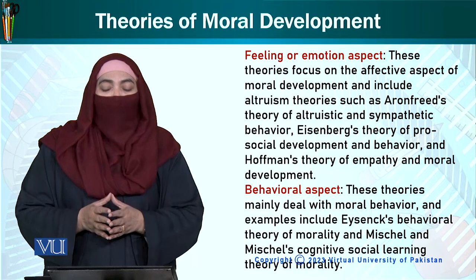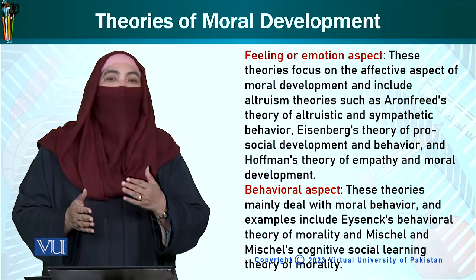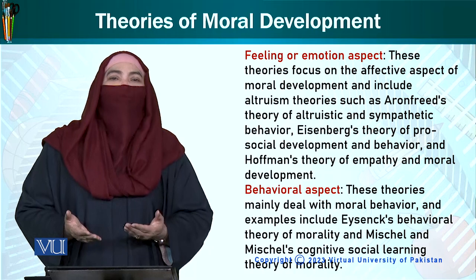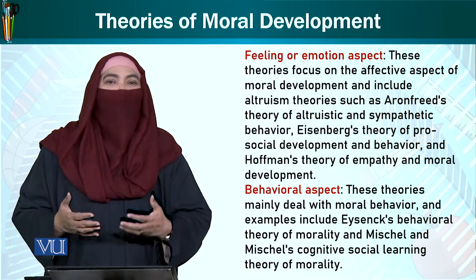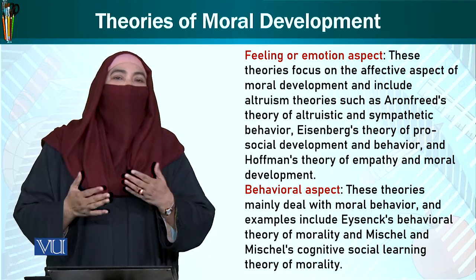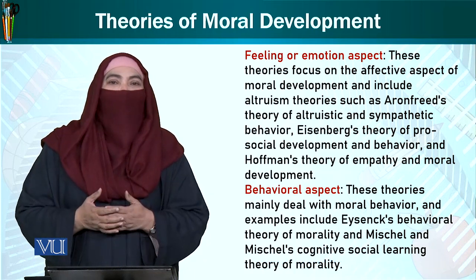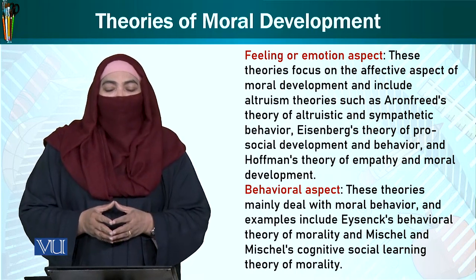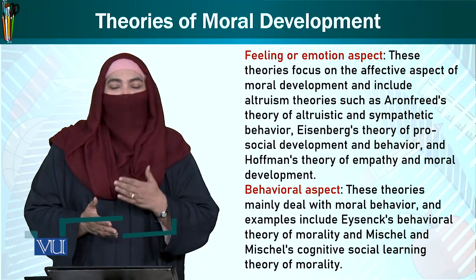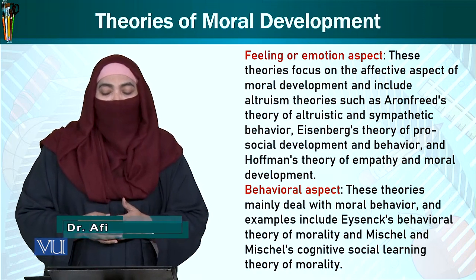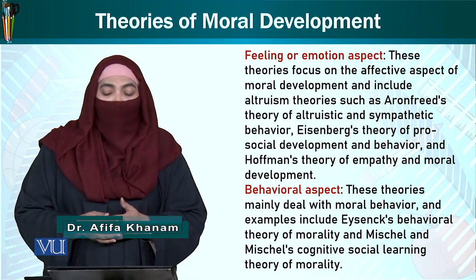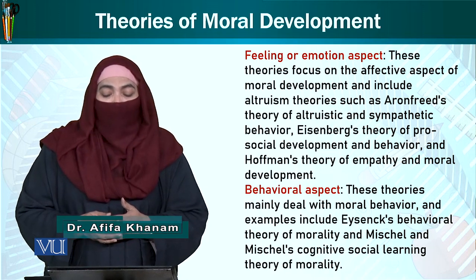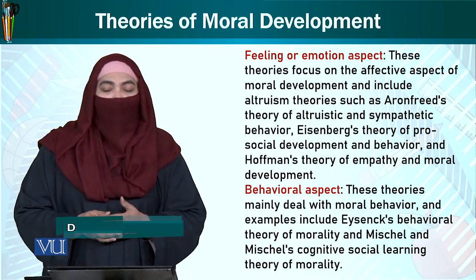Some of them are feeling or emotion aspect. The theories under the feeling/emotion aspect show how our feelings and emotions teach us ethical and moral values. These theories focus on the affective aspect of moral development and include altruism theories such as Aaron Fried's theory of altruistic and sympathetic behavior.